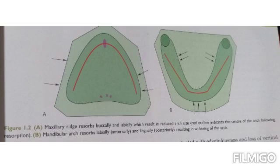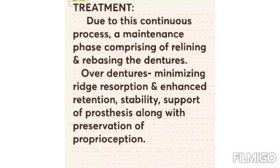The pictures illustrate this: Picture A shows the maxillary ridge resorbing buccally and labially, resulting in a reduced arch size — the red line indicates the center of the arch following resorption. Picture B shows the mandibular arch resorbing labially and lingually, resulting in widening. Maxilla is constricted while mandible widens, producing the pseudo Class 3 appearance.